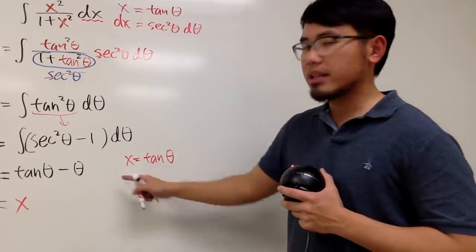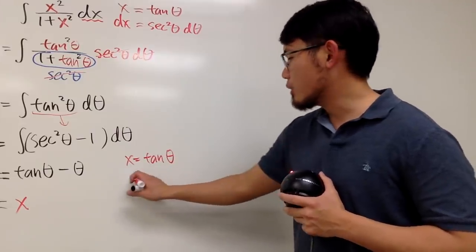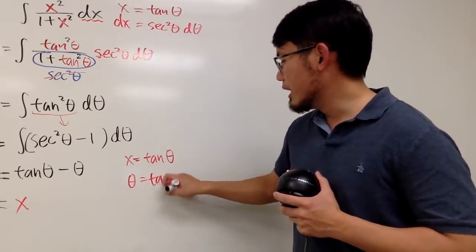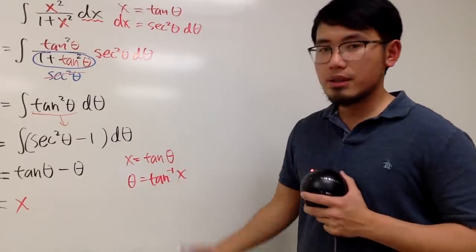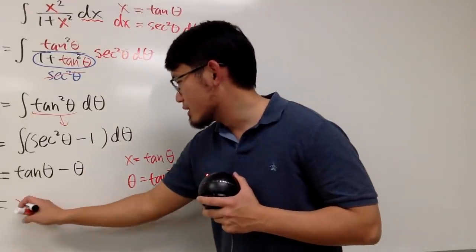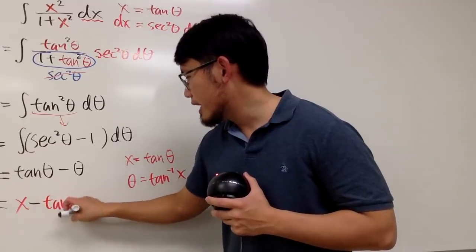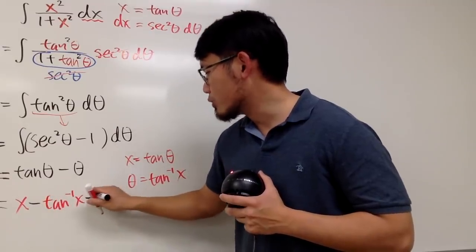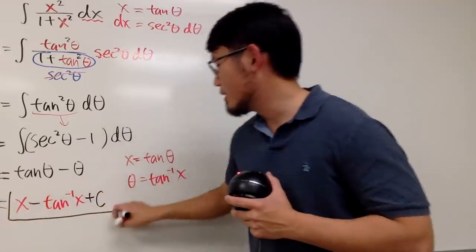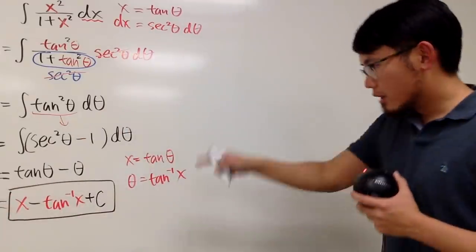And I also need to have theta by itself. Well, it's not that bad because I can just take the inverse on both sides. In other words, we know theta is equal to the inverse tangent of x. So I'll put this right here for that. So we have x minus inverse tangent of x. And we're all done. Put plus c. That's all. Right? Cool.